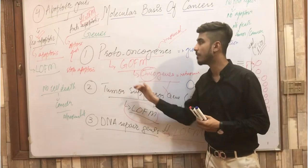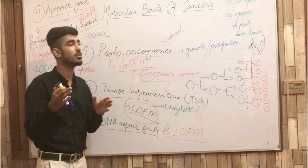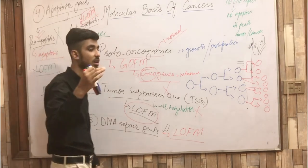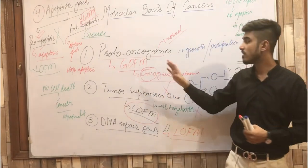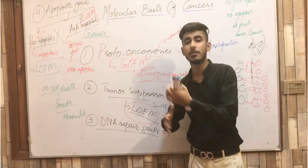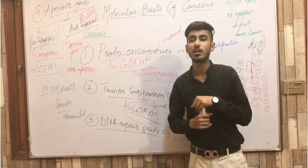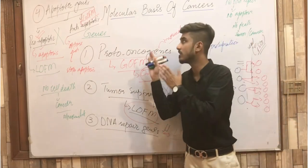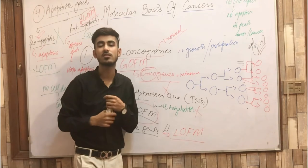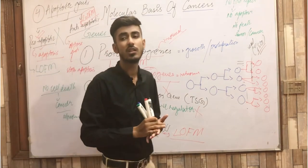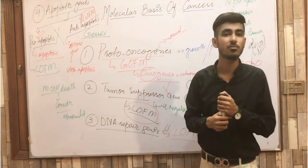These are the four types of genes that are very important: normal genes whose mutations — loss of function and gain of function — result in the development of cancer. In further lectures, we will study the specific genes and their mechanisms. We have studied just the basic mechanism of what these genes are. We will be completing the molecular basis of cancer in two lectures — this was the first lecture. In the second lecture, we will discuss certain terminology including driver mutations and passenger mutations. If you have any questions, you can ask in the comment section. Thank you so much for watching.